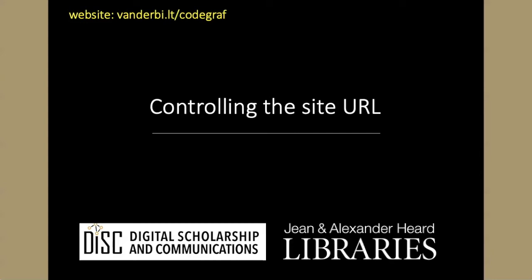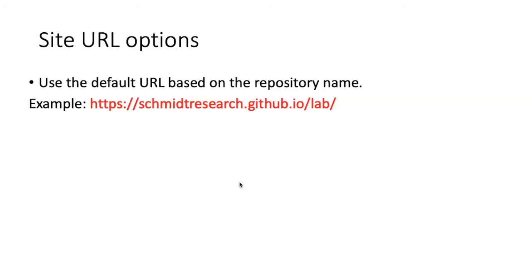The URL of your website is an important part of your branding. In this part of the lesson we're going to take a look at some of the different ways that you can control the URL of your site. So far we saw that the default URL is based on a combination of your account name followed by github.io and then a slash which includes the repository name for your site. You have a limited amount of control over this based on what you choose for your repository names and what you're able to get for your account name.